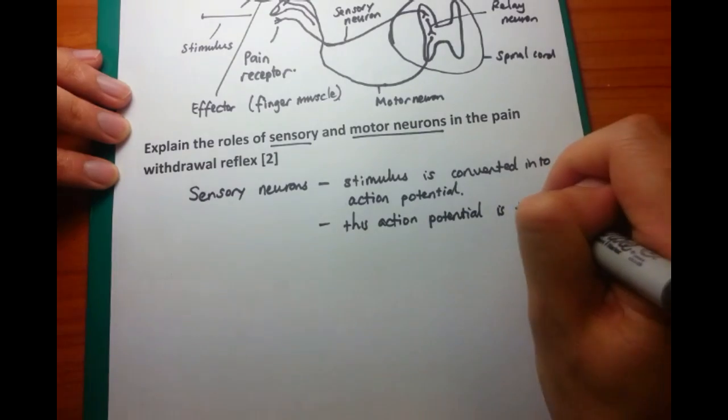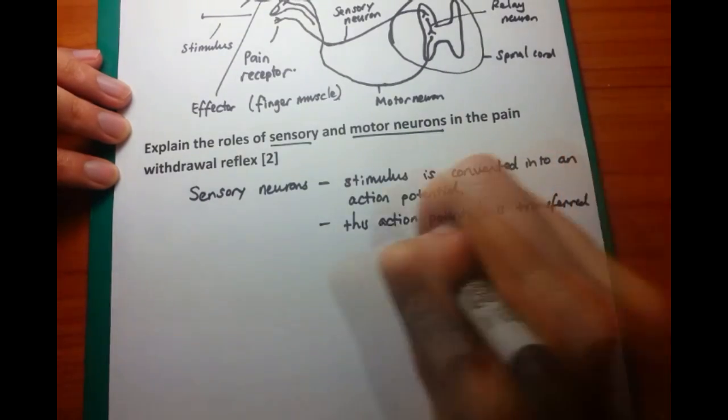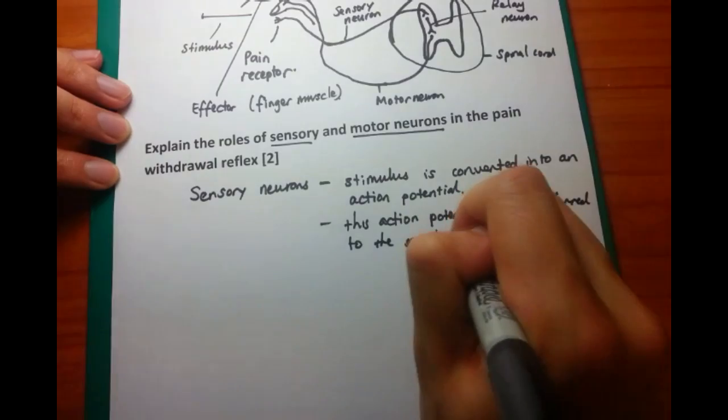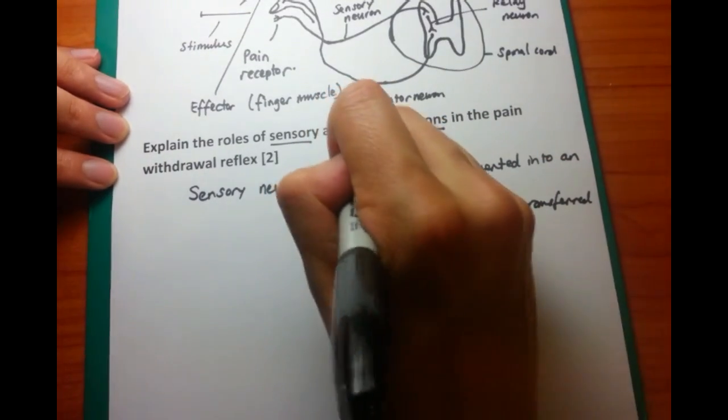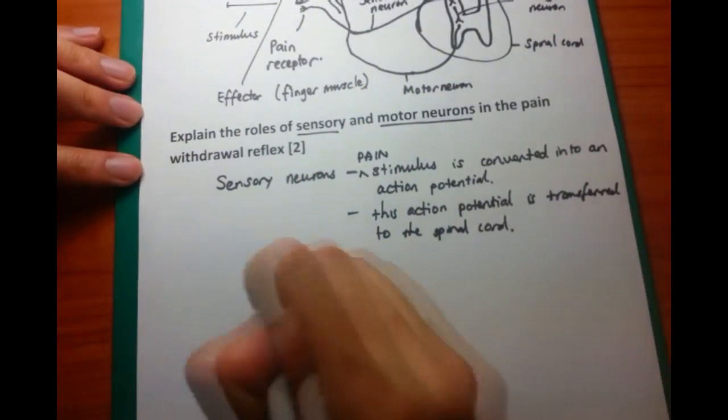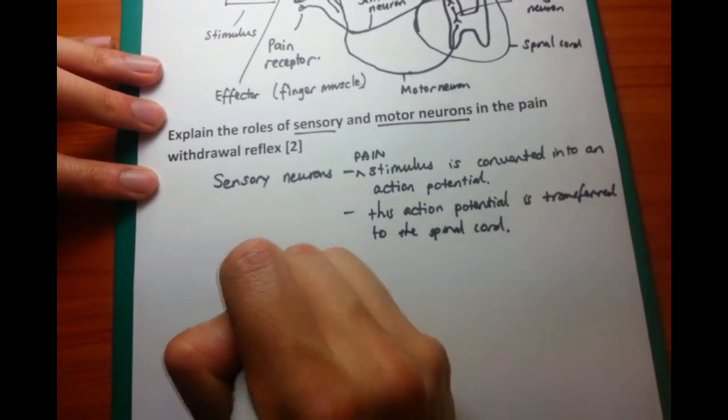And that's the second point. The action potential, or message, is transferred to the spinal cord. And then this is then processed, well not even processed in fact, but just directly connects to the motor neuron, and thus causing a reflex withdrawal.